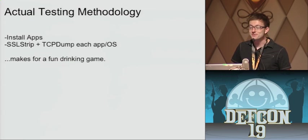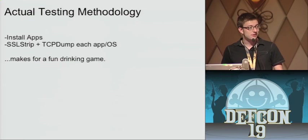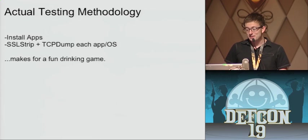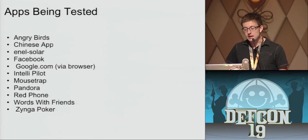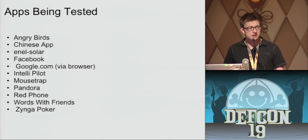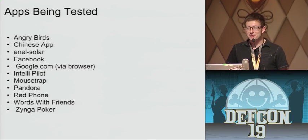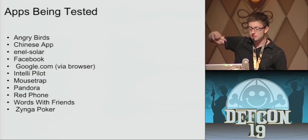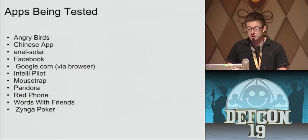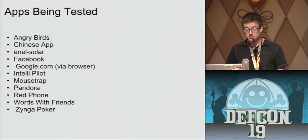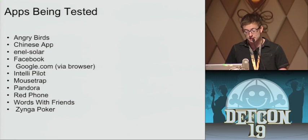What actually happened was I just took a massive PCAP file for each app, SSL stripped it, TCP dumped it, and made a drinking game out of it. For the apps I tested, I decided to do a mix: Angry Birds, a really sketchy Chinese app — I don't read Chinese but it looked sketchy, kind of my sketchy test — and then random applications. I got the main ones: Facebook, just browsing the web on Google — that actually happened by accident but I found some fascinating things so I decided to keep it in.